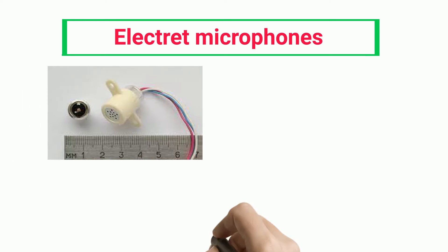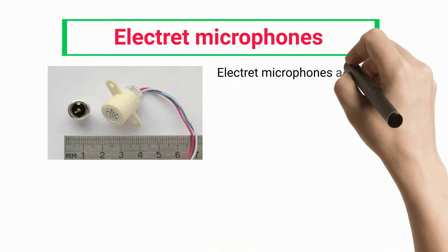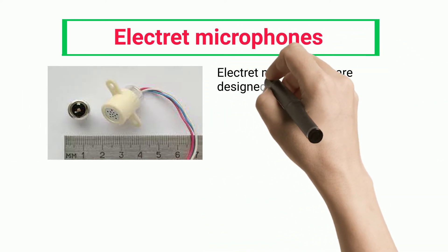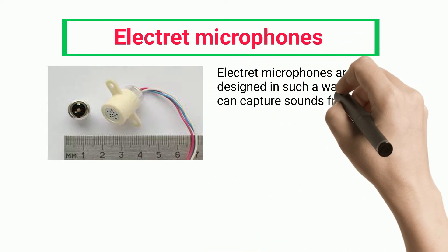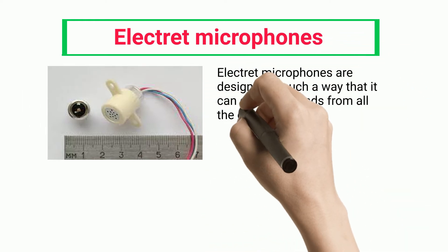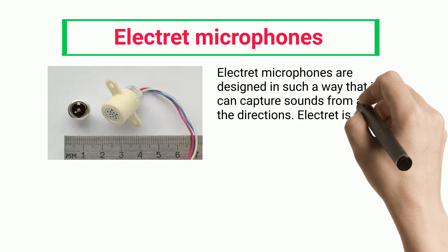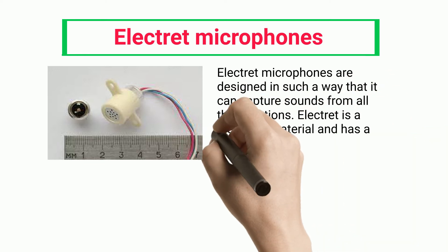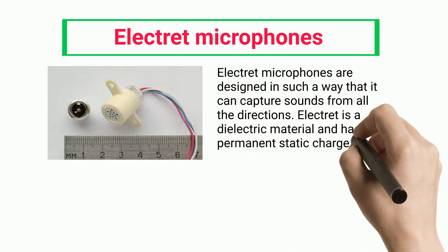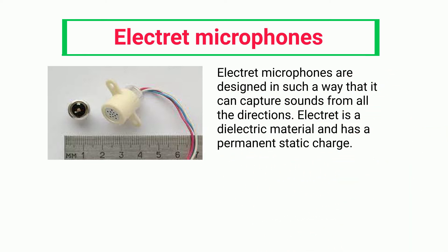Electret microphones are designed in such a way that they can capture sounds from all directions. Electret is a dielectric material and has a permanent static charge.